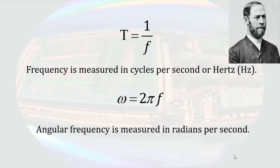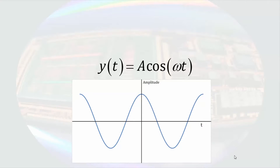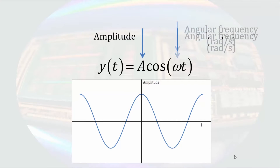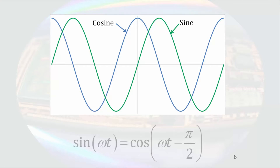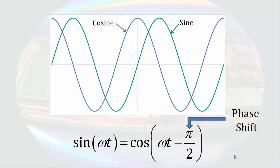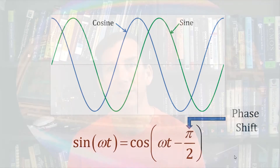A generalized cosine function would then be described in terms of some amplitude a times a cosine of the angular frequency multiplied by time. Cosine is an even function, so it is symmetric around time equals zero, as the graph shows. Sine is a very similar function — the only difference is that the wave is shifted on the time axis. We can convert a sine wave to a cosine function by subtracting π/2 from the original argument. This factor of π/2 is the phase shift, and the adjustment is called the phase angle.